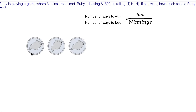The number of outcomes: there are two possibilities for the first coin, two possibilities for the second coin, and two possibilities for the third coin, which is two to the power of three — or two times two is four, times two is eight. There are eight different outcomes you can get.